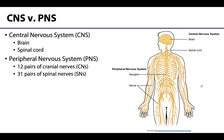The nervous system is often split into different systems for descriptive purposes. Structurally, it can be divided into the central nervous system, or CNS, which consists of the brain and spinal cord with major functional roles of integration and coordination, and the peripheral nervous system, or PNS, which consists of nerve fibers and cell bodies outside the CNS. These nerve fibers will conduct impulses to or away from the CNS — like we talked about in the last session with afferent and efferent fibers.